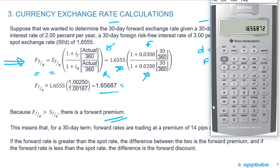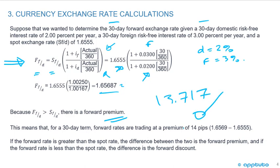To express the difference in pips: forward rate minus spot rate = 1.65687 − 1.6555 = 0.001372. Multiplying by 10,000 gives approximately 13.7 pips, rounded to 14 pips. To summarize: if the forward rate is greater than the spot rate, the difference is the forward premium; if the forward rate is less than the spot rate, the difference is the forward discount. The forward rate formula is the spot rate times (1 + foreign rate × T) divided by (1 + domestic rate × T).